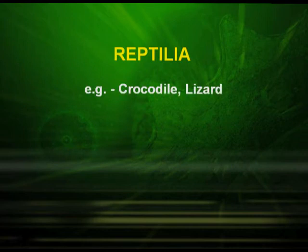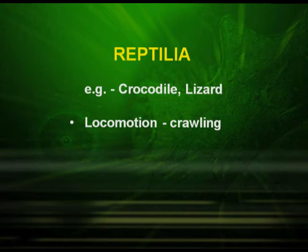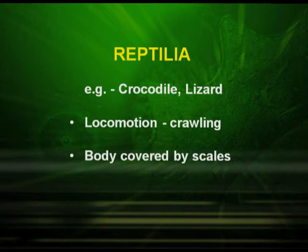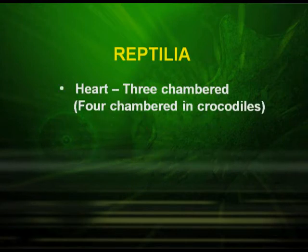Reptilia includes crocodiles and lizards. Their locomotion is by crawling and the body is covered by scales. The heart is generally three-chambered, but in the crocodile it is four-chambered. They are cold-blooded animals.